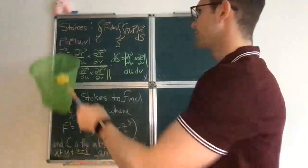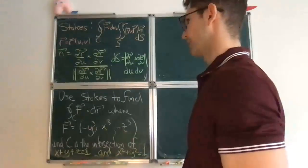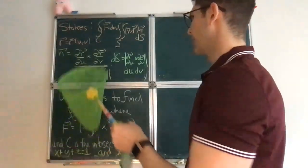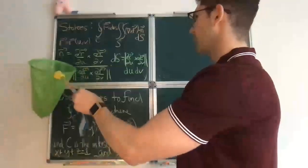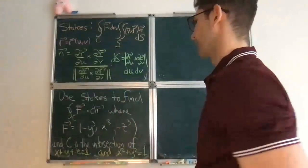In order to use Stokes, you have to parametrize first your surface, as I explained in the previous video, and once you parametrize the surface, you can obtain both the normal vector and the surface differential.